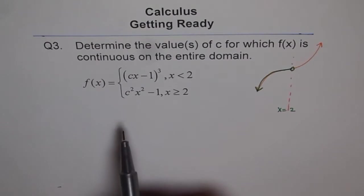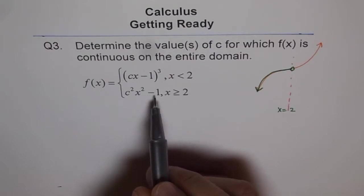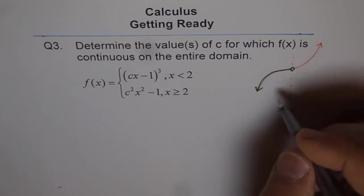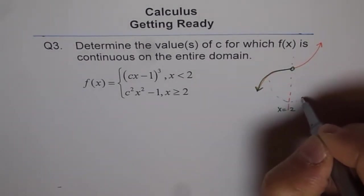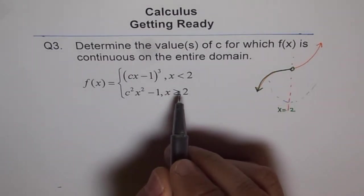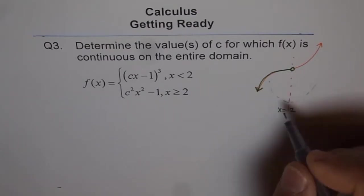Now, the other function here is c²x² - 1. So it is like a square function. Square functions could be like a parabola. Parabolas will be like this. And now, we are only concerned with the part which is greater than or equal to 2.